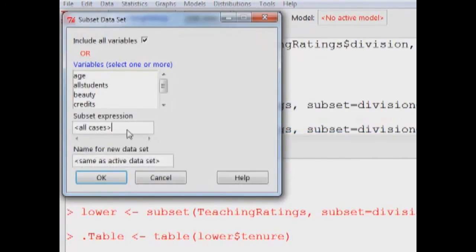Here I would type the command, and I say division, that's the variable, and I put double equal sign, equal to upper. This would select all instances under the variable division where it says upper, and I would like to save it as a separate dataset called upper.